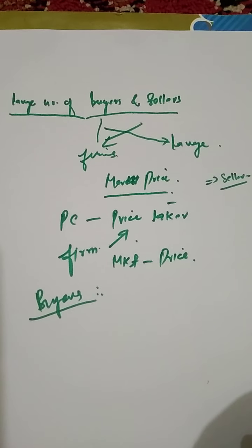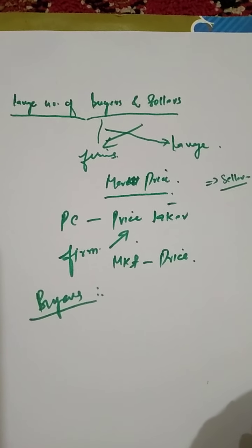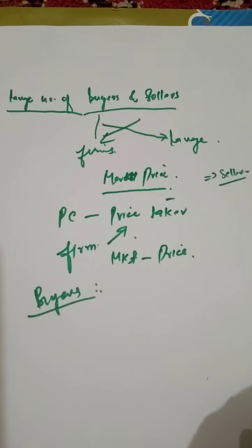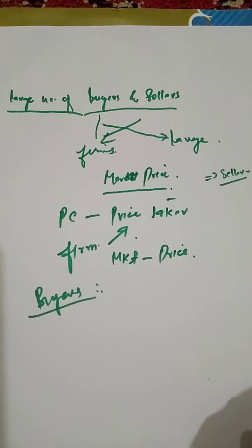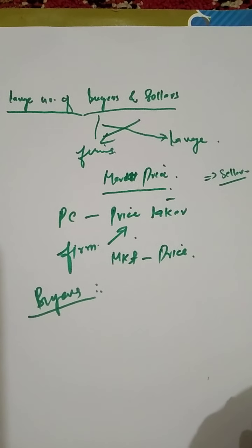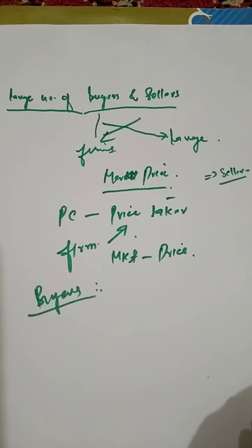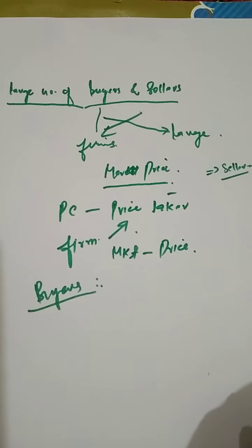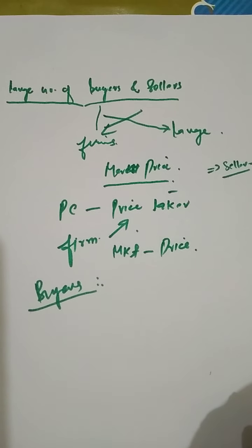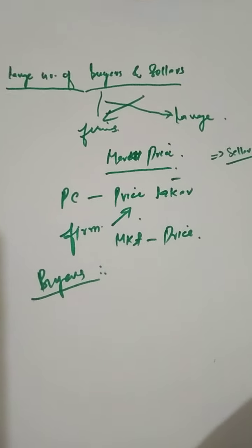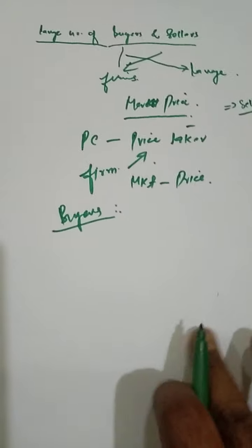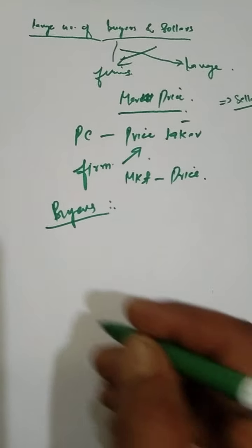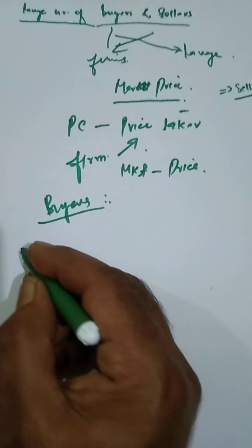So what we understand from this first feature is that under perfect competition, the number of buyers and sellers is so large that a firm or a buyer by their individual action cannot affect the market price. They have to accept the price set by the industry.